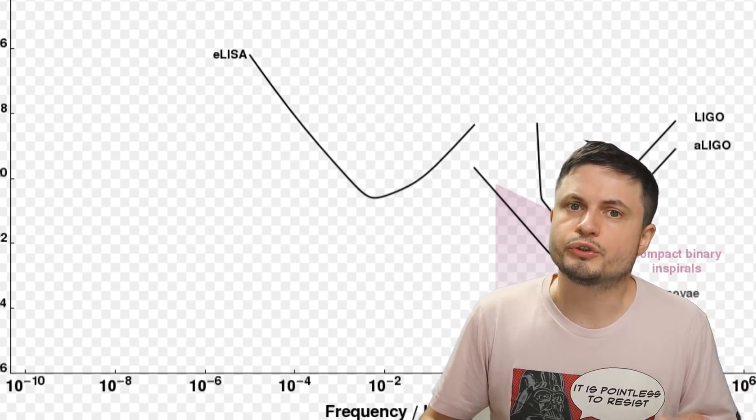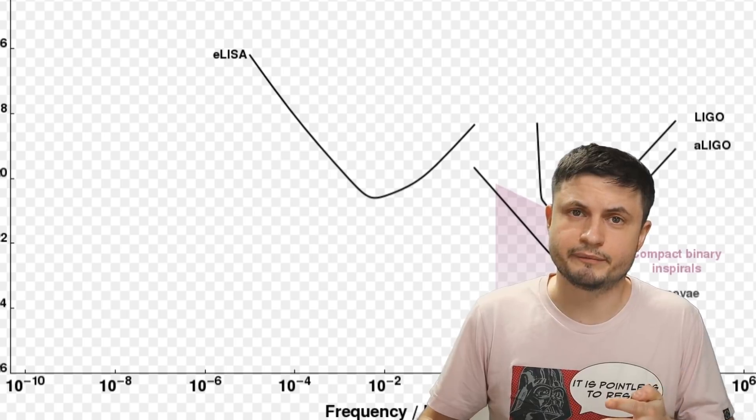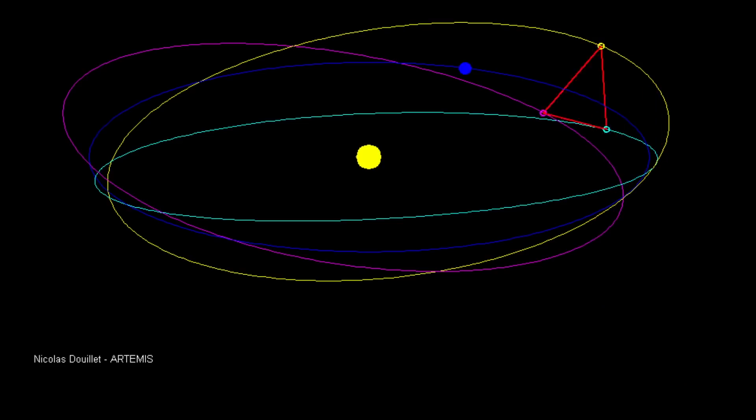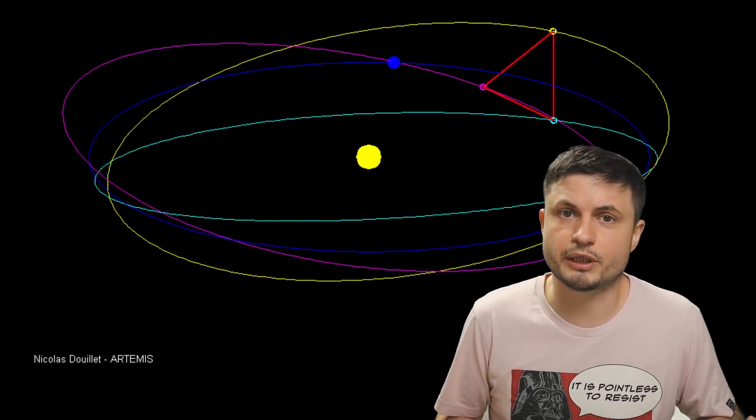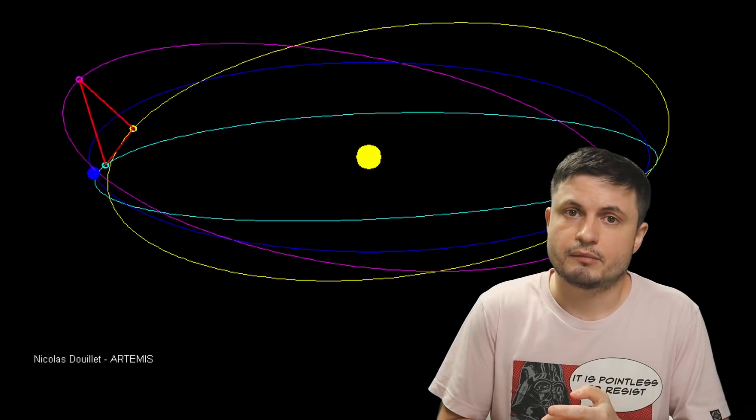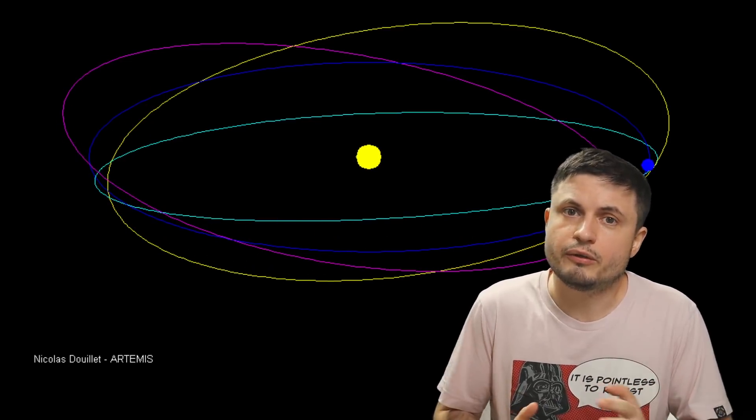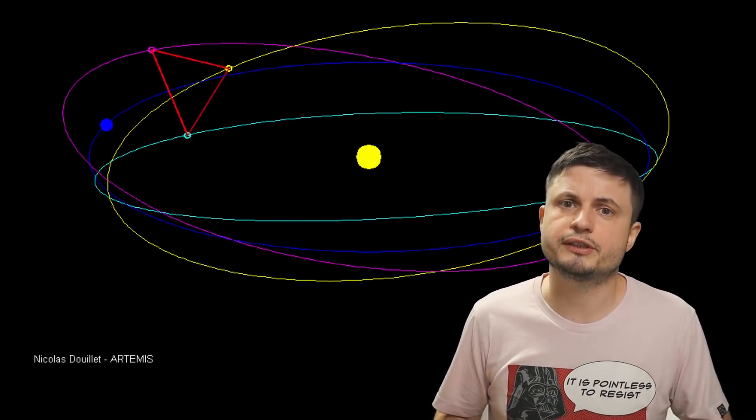Now in this graph we also have something called LISA, or the Evolved Laser Interferometer Space Antenna, which is supposed to be able to detect all of this. But the thing is, this is still in very early planning and this is going to be an interferometer orbiting around the sun itself. Currently planned for sometime in 2034, so maybe in 15 years from now we might have something like this. But until this is operational, we're not really able to detect lower frequencies very well.